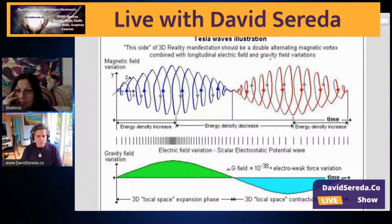That's the illustration of a counter-rotating or alternating current electromagnetic field variation. But it's on the same axis — notice the axis is in the middle between the blue and the red, and they're not out of phase with each other. This is how you give birth to a Tesla wave.